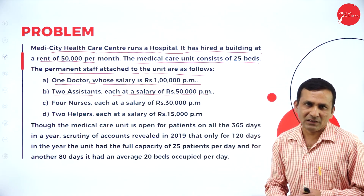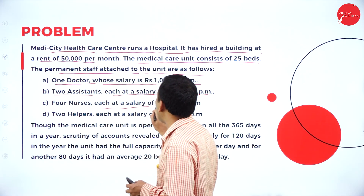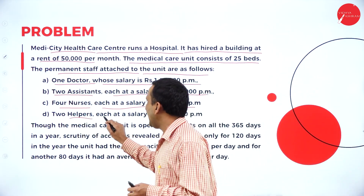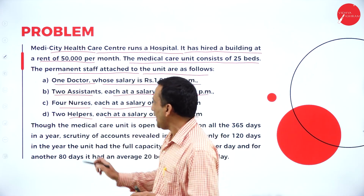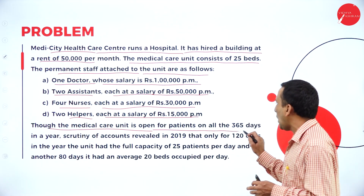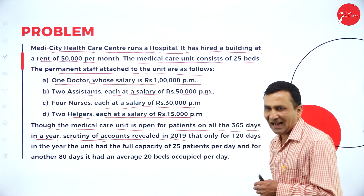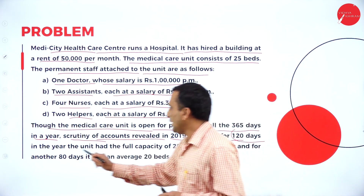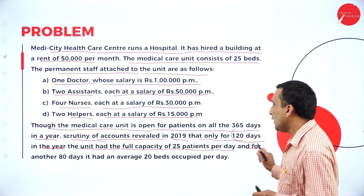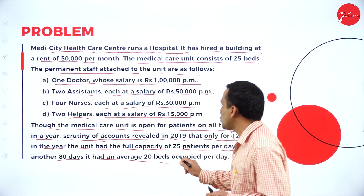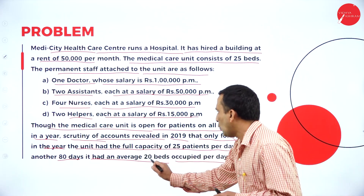Two assistants, each at a salary of 50,000 per month — multiply by 2 and by 12. Four nurses, each at a salary of 30,000 per month, and two helpers, each at a salary of 15,000 per month. The medical care unit is open to patients all 365 days. In 2019, accounts revealed that for 120 days the unit had full capacity of 25 patients per day, and for another 80 days it had an average of 20 beds occupied per day.